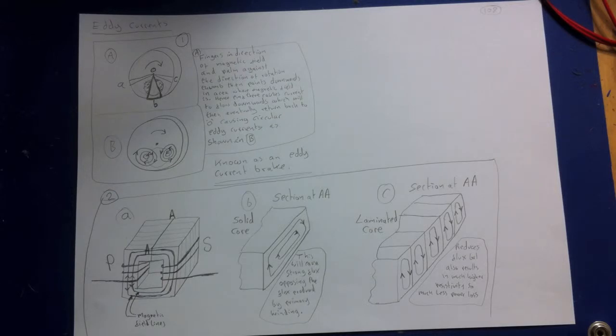However, many pieces of electrical equipment contain masses of metal moving in magnetic fields or located in changing magnetic fields. In such situations, it is possible to have induced currents that circulate throughout the volume of the materials. Because of their circulating nature, we call them eddy currents.